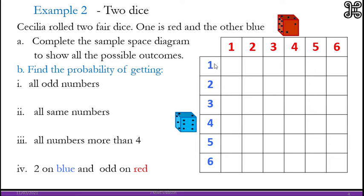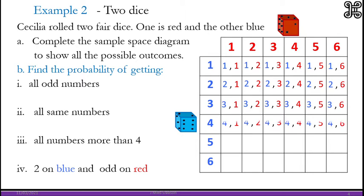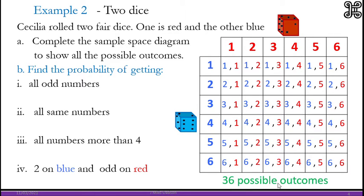So we are supposed to list the outcome of the 2 dice and use it to work out these probabilities. So the same way 1 and 1, 1 and 2 and so on. That will be the first 2, 1, 2, 2 and so on. So you have 36 possible outcomes.